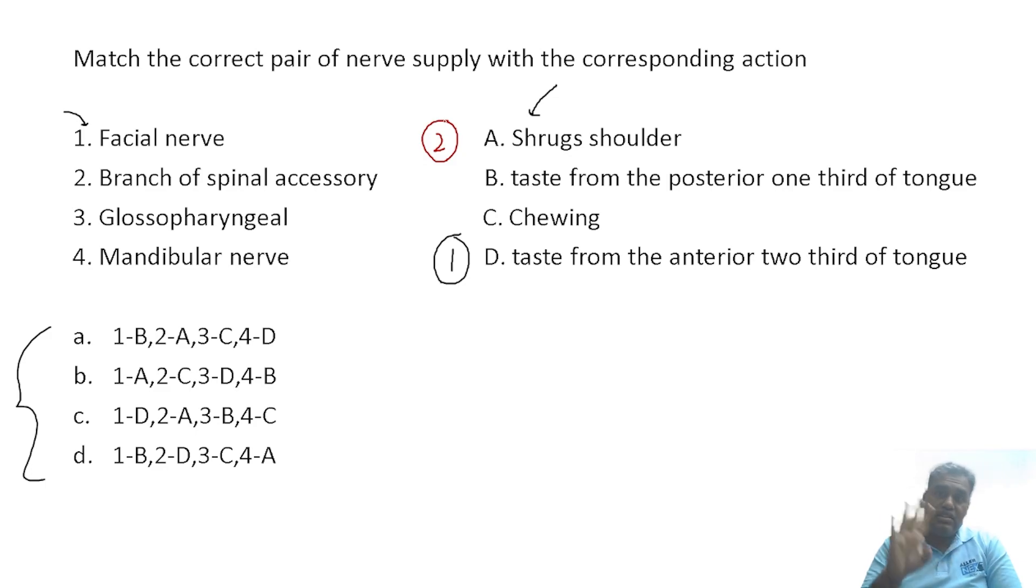Option 3, the glossopharyngeal is the 9th nerve. Glosso means tongue, pharyngeal means pharynx. It is basically sensory to both the tongue and pharynx - the posterior part of the tongue. It's also sensory to the pharynx. Apart from this, it's also going to supply one lone muscle, the stylopharyngeus. But here, glossopharyngeal is giving us the taste from the posterior third. So we will go with option 3.